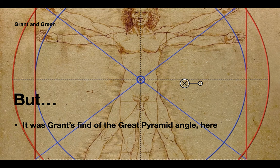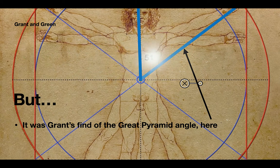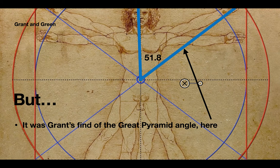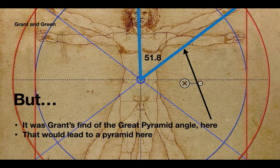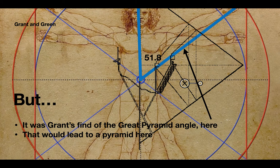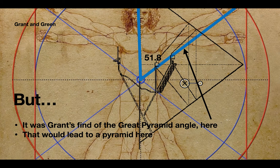But it was Grant's find of the Great Pyramid angle here. So between those two blue lines, Grant found a 51.84 degree angle, which is the slope angle of the Great Pyramid, a very unique slope angle. And so he said to Alan Green, can you find the Great Pyramid here? It seems like it would be. And so that would lead to a pyramid here, because that's where that 51.8 degree angle is.